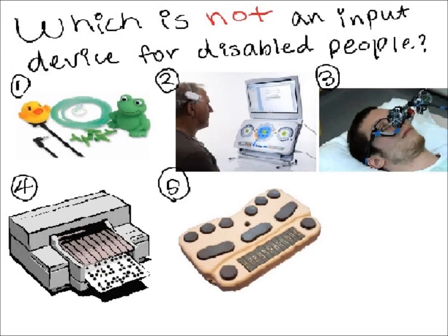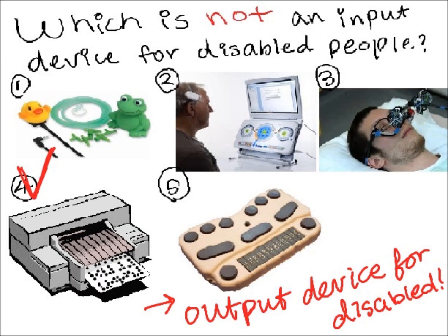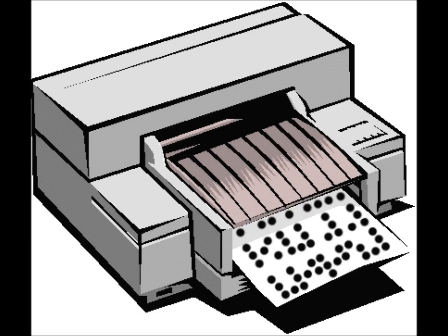A short question: which is not an input device for disabled people among these five pictures? The answer is number 4, because number 4 is a braille printer, which is an output device, not an input device for disabled people.